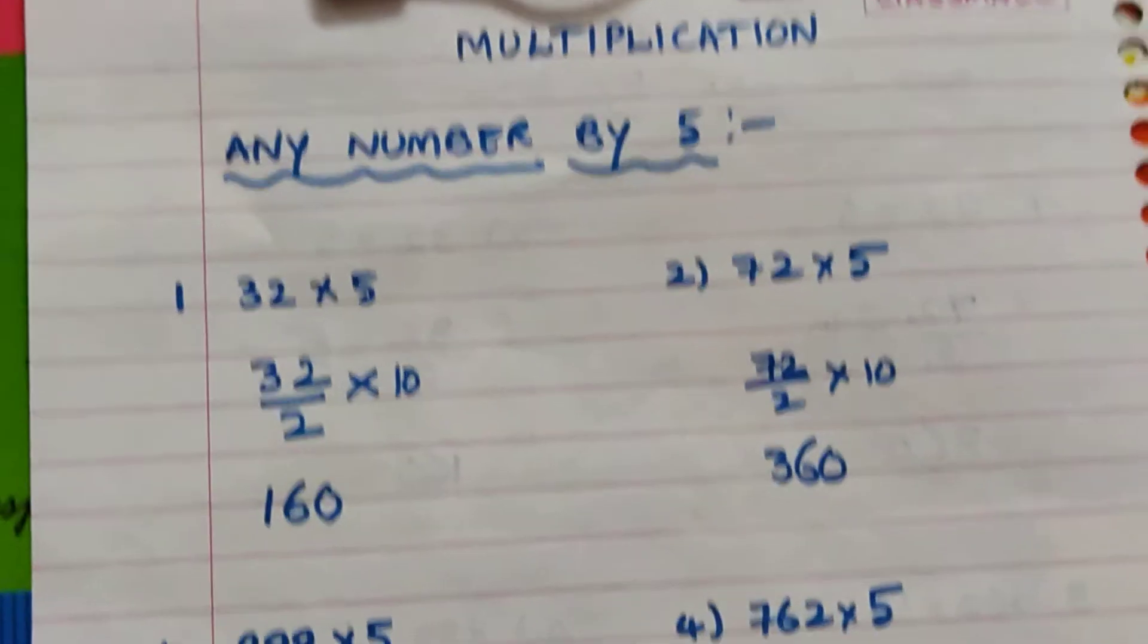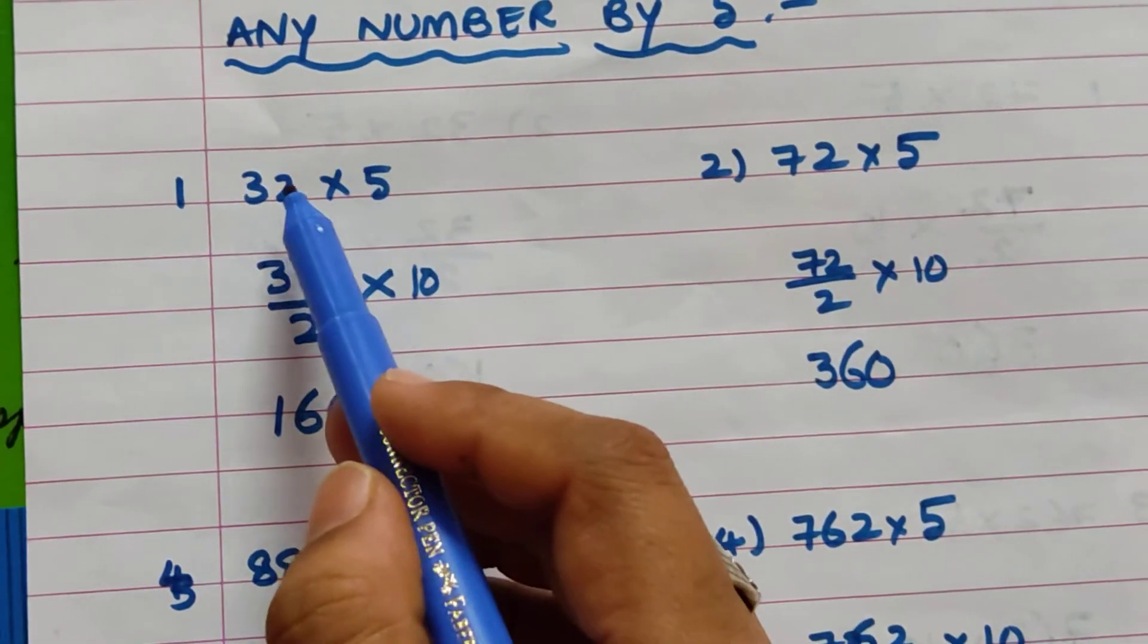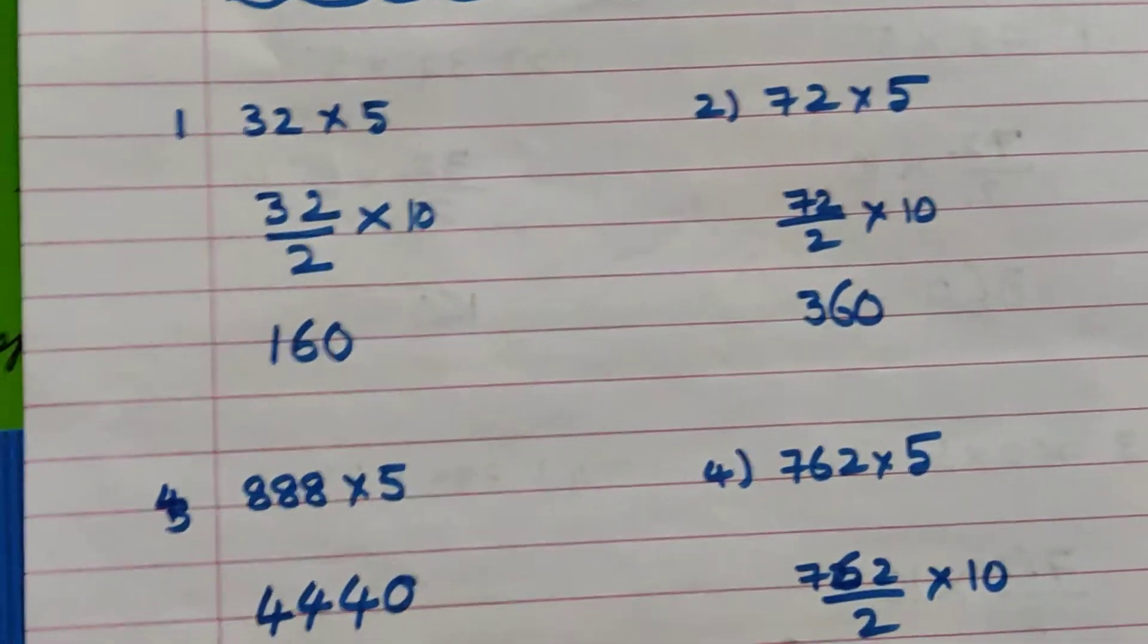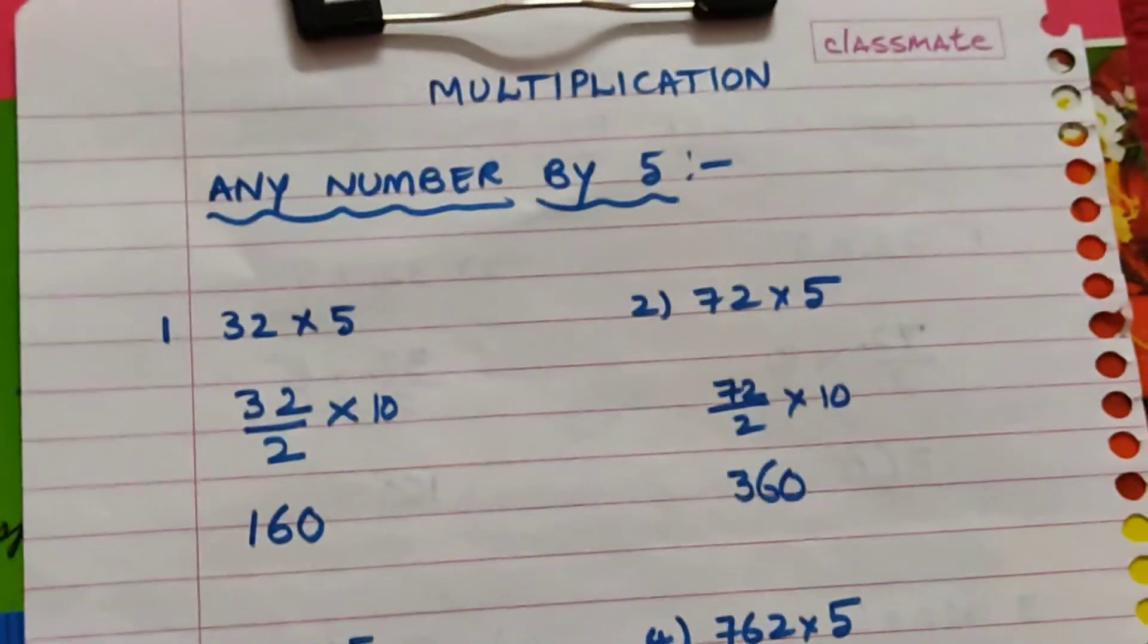Without a pen you can solve. No need to write these steps also. Directly you can solve 32 into 5 means by 2, then add 0 only. That's it. Thank you friends.